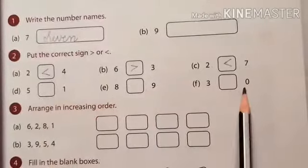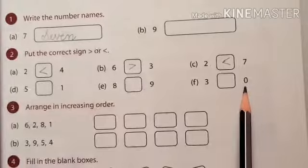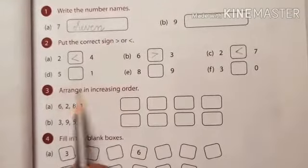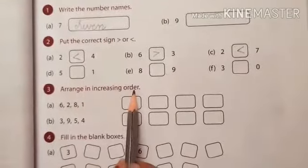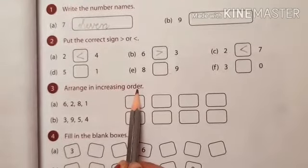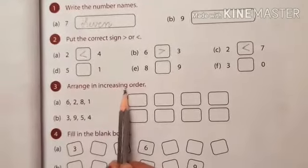These 3 are for you to practice. Number 3. Arrange in increasing order. Increasing order means smallest first, biggest last.